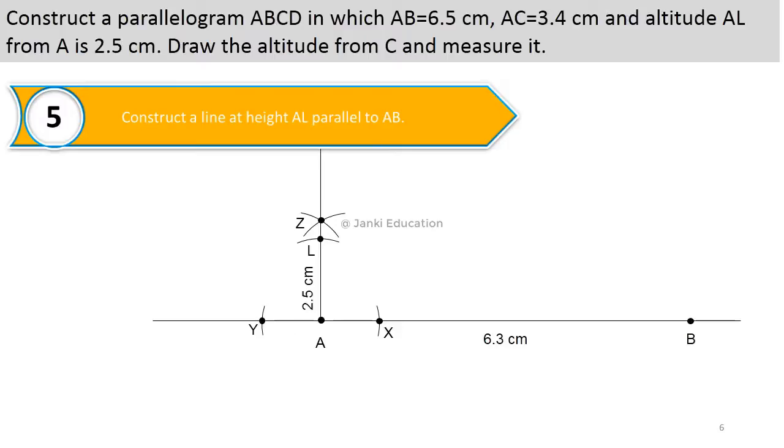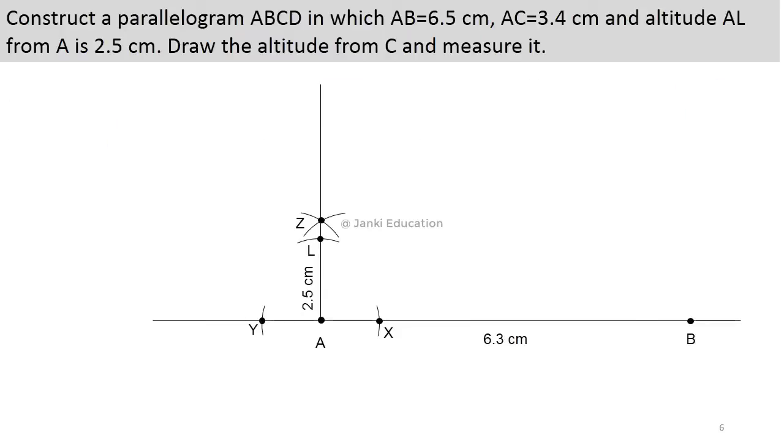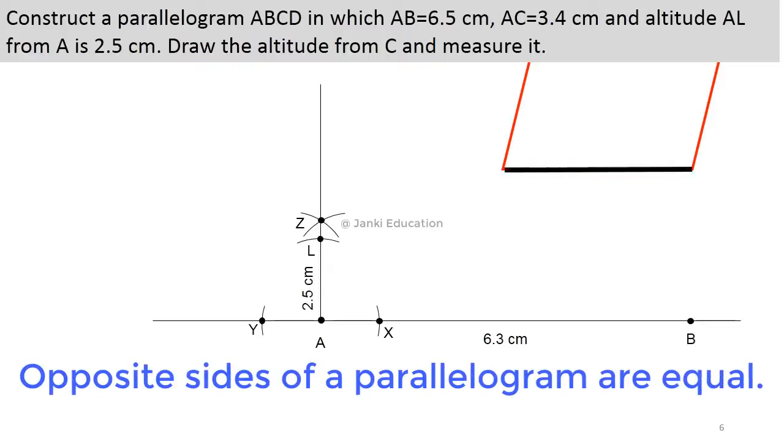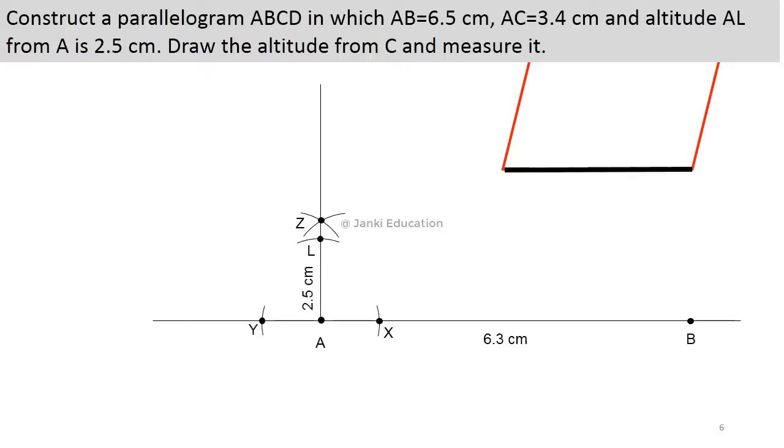Next, construct a line at a height AL parallel to AB. So you know the parallelogram we have to construct, parallelogram ABCD, so opposite sides of parallelogram are always equal and there must be one parallel to another side.